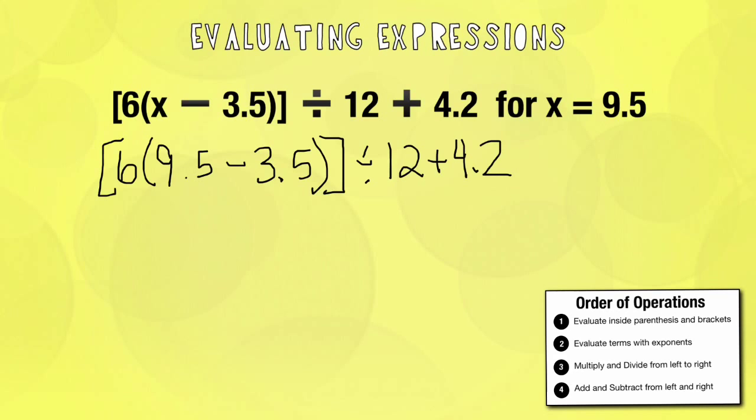Okay, now I'm ready. So again, here's something I didn't mention yet. But when you have a number directly next to parenthesis, that means you're actually going to multiply because this is the distributive property. So what it's saying here is we're taking 6 times 9.5 minus 6 times 3.5.